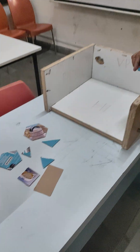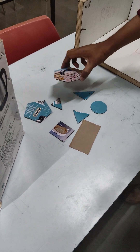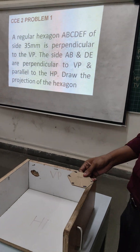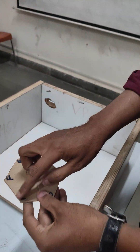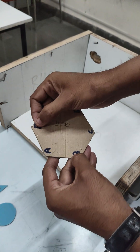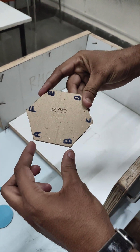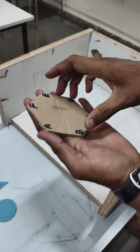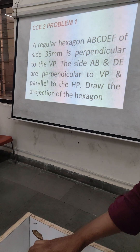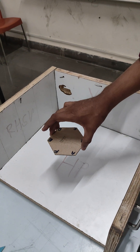Now here a 2D component is given for different planes. Choose this hexagon — for this particular solution we need a hexagon. The nomenclature is already given: A, B, C, D, E, F. The entire side is 35 mm. According to the condition, a regular hexagon is perpendicular to VP. Now, fix this position.